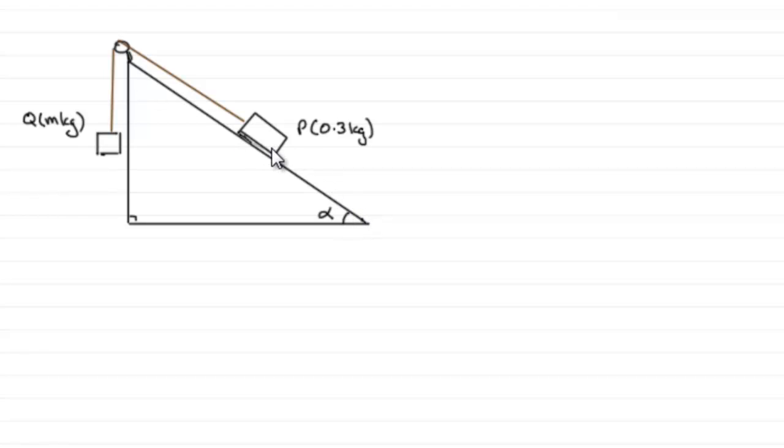So we need to mark on some forces. Now whether this plane was rough or smooth, there'll always be the weight of the particle P. That will act downwards, so we need to mark that in, acting downwards. Its weight would be mg, 0.3g in this particular case. We'll mark that in as newtons.